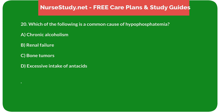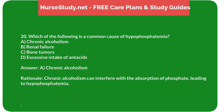Question 20: Which of the following is a common cause of hypophosphatemia? A. Chronic alcoholism. B. Renal failure. C. Bone tumors. D. Excessive intake of antacids. Answer: A. Chronic alcoholism. Rationale: Chronic alcoholism can interfere with the absorption of phosphate, leading to hypophosphatemia.